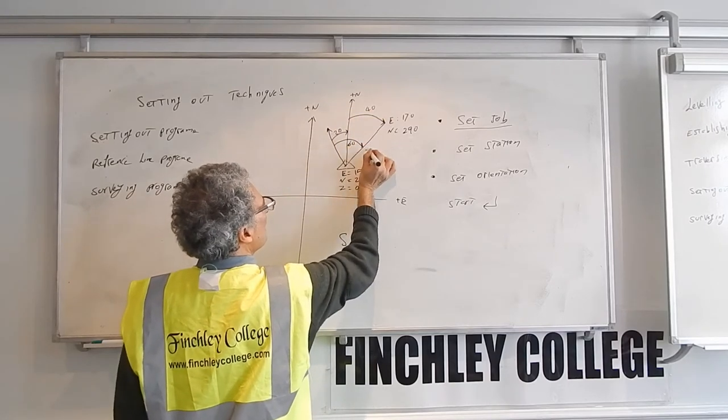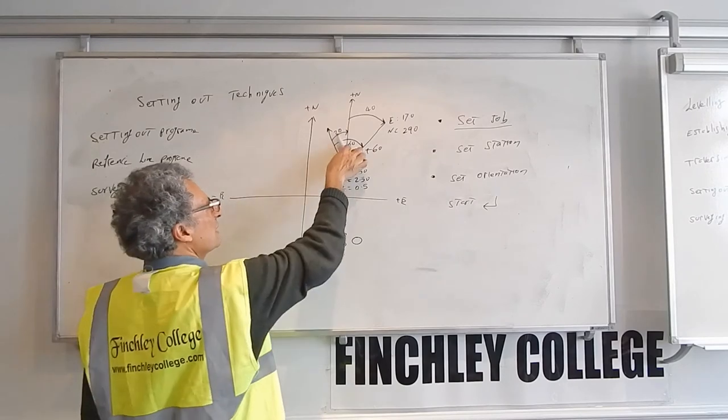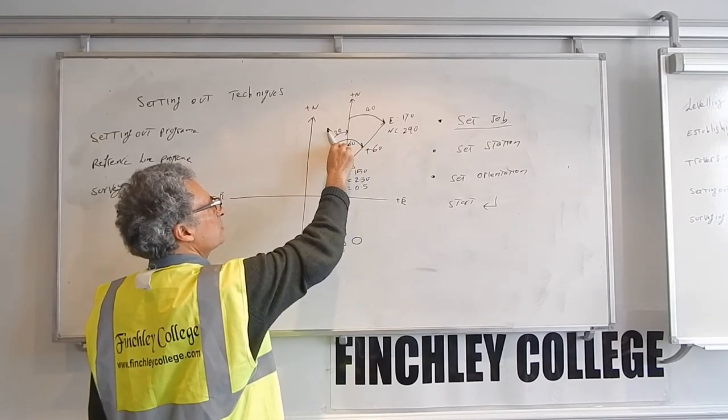So for example, this is 20 degrees and this is 40 degrees. It will show you 60 degrees plus 60, i.e. turn me 60 clockwise. So you turn 60 degrees clockwise from where it's pointing now.